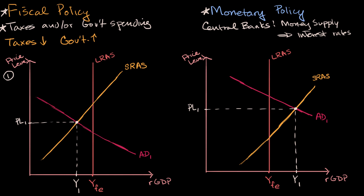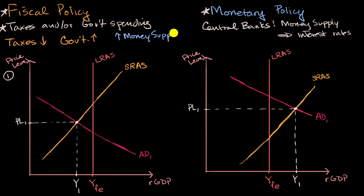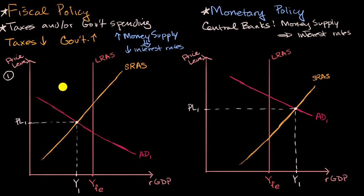But in parallel with the fiscal policy, what might the monetary policy look like? Well, an expansionary monetary policy would be to increase the money supply, which would usually have the impact of lowering interest rates, which would make borrowing cheaper, so corporations might invest more and people might borrow and spend more. Either way — and especially if both are happening — you are going to shift aggregate demand to the right.